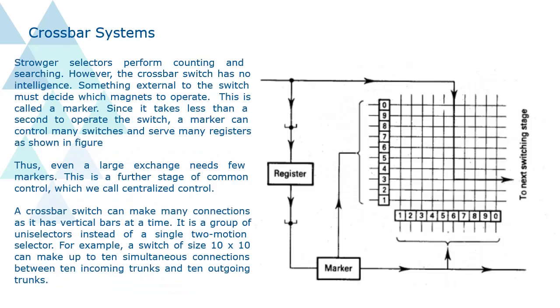Strowger selectors perform counting and searching. However, the crossbar switch has no intelligence. Something external to the switch must decide which magnets to operate. This is called a marker.